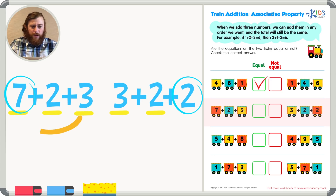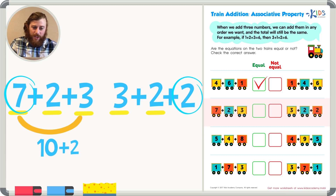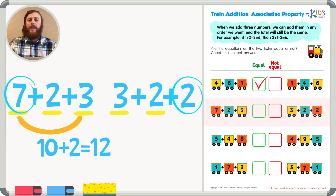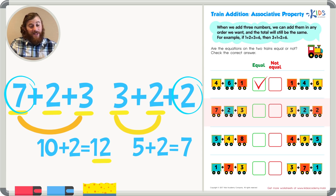First I'm going to add 7 plus 3. Like the associative property says, I can add in any order that I want, and I know that 7 plus 3 makes a 10. 7 plus 3 equals 10. I can add the remaining 2, and 10 plus 2 equals 12. My first train has a sum of 12. My second train: I'm going to add 3 plus 2 together — 3 plus 2 equals 5. I'll add the remaining 2, and 5 plus 2 equals 7. 12 is not the same number as 7, so our two trains in the second example are not equal to each other.